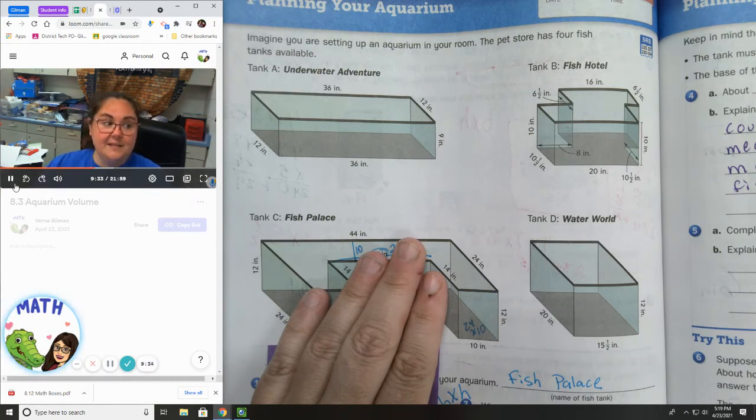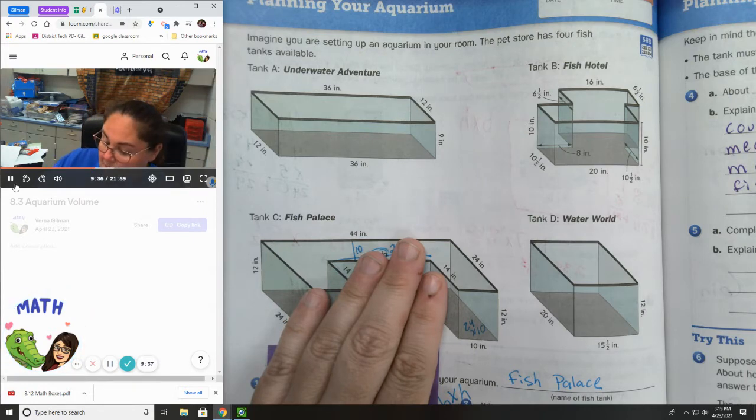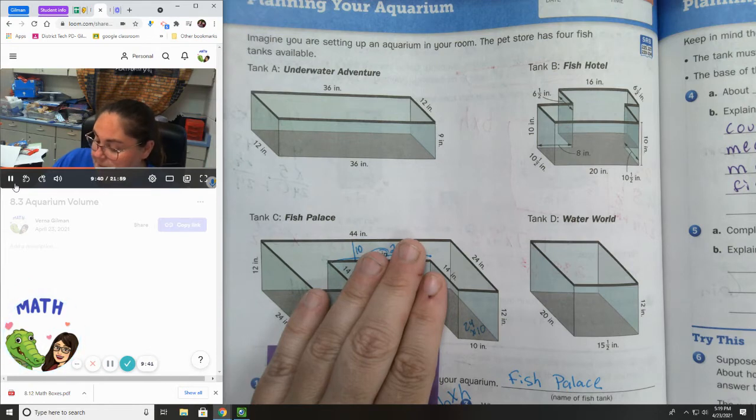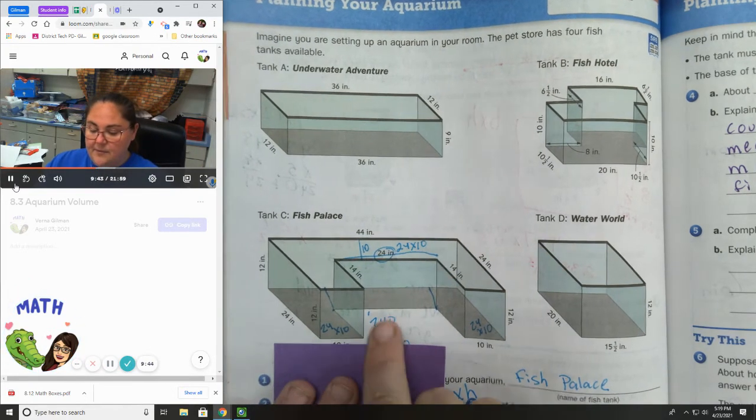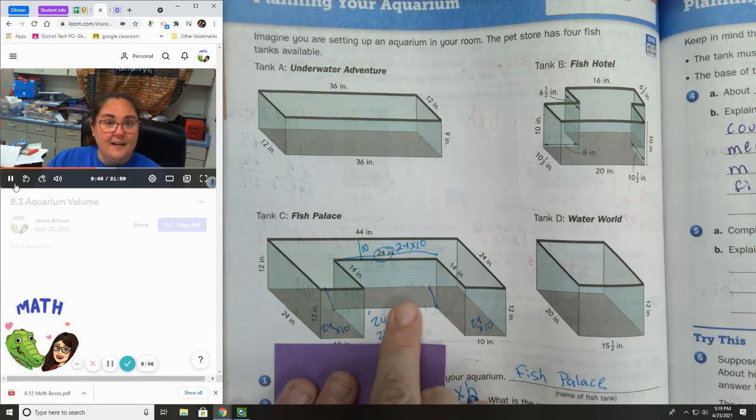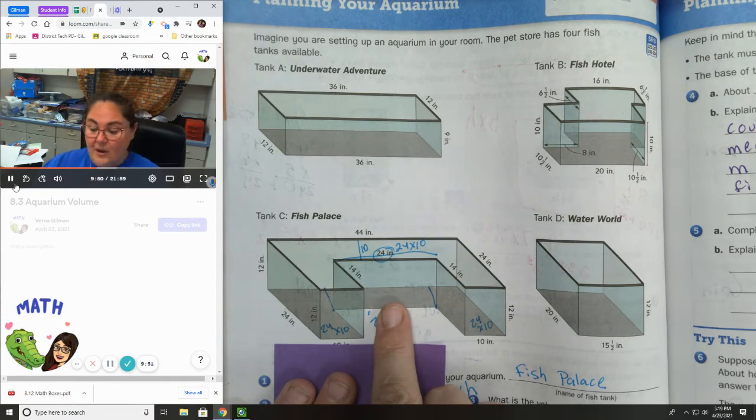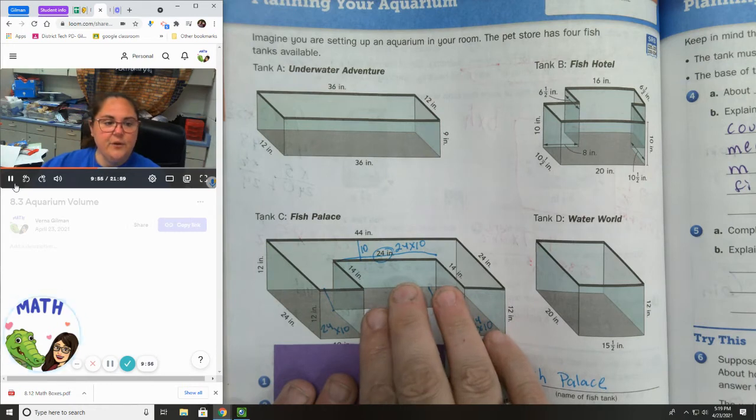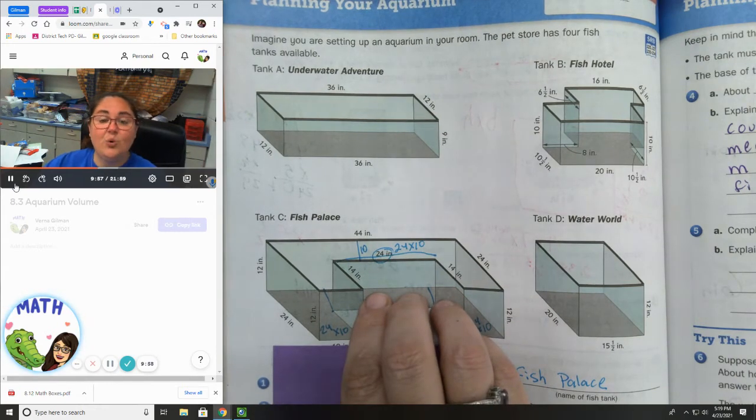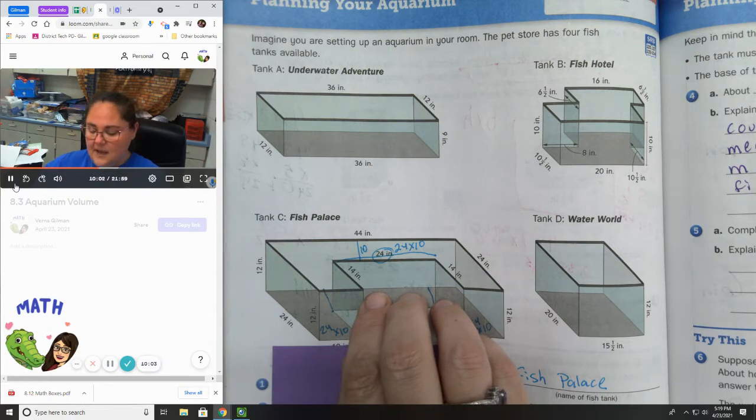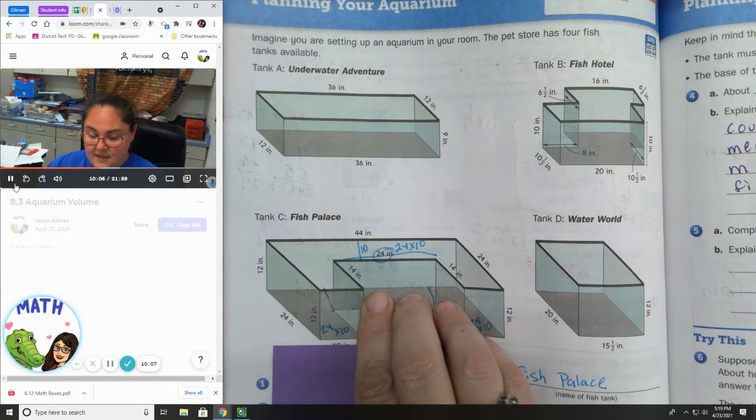Now, I'm going to use tank C. I'm going to use fish palace. The reason why is because I'm thinking about Lincoln. I know that he would be able to kind of stand in the middle here, and it would look like fish were kind of all around him. I think he would think that was really neat. So I'm going to use this one. If you used one of the other fish tanks, that's okay.